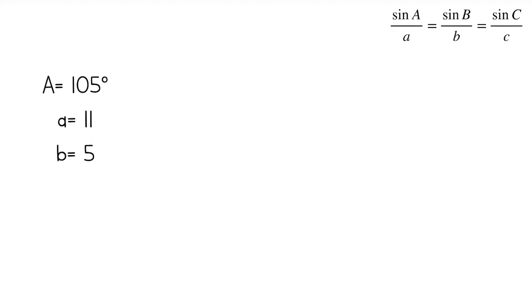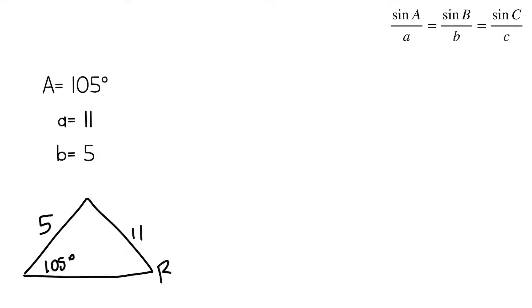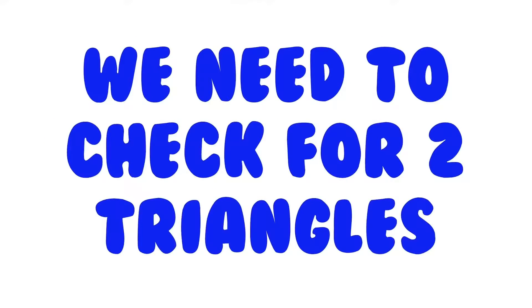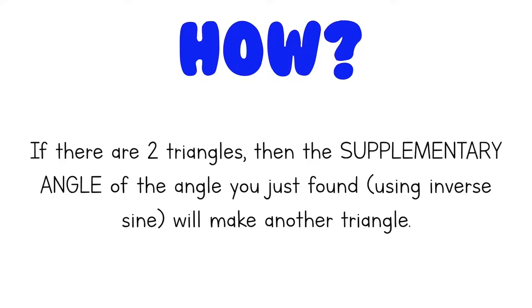Now let's look at another example with angle A and sides A and B. I'll draw a sketch — 105 degrees is opposite 11, and 5 is opposite angle B. Using the law of sines to find angle B, I get B equals 26.1 degrees. Reality check: 105 plus 26.1 is less than 180, which leaves enough room for a third angle, so yes, this triangle does exist. But we also need to check for two triangles. If there are two triangles, then the supplementary angle of that angle you just found using inverse sine will make another triangle.